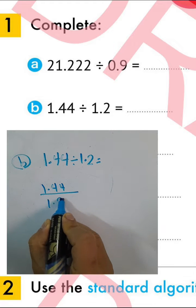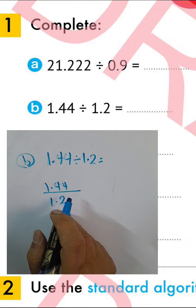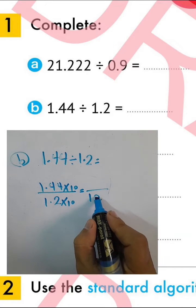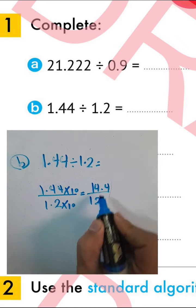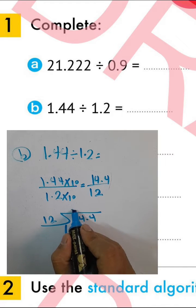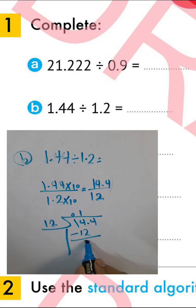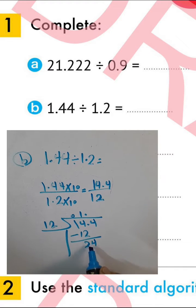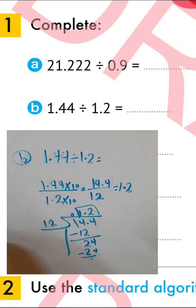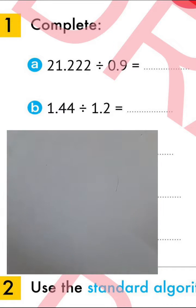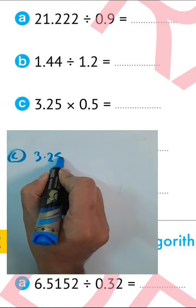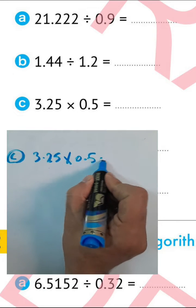Next: 1.44 divided by 1.2. We can cancel the point in the denominator by multiplication by 10. The result will be 12 in the denominator and 14.4 in the numerator. 14.4 divided by 12: 14 divided by 12 equals 1. One times 12 equals 12; the difference is 2. Drop 4. 24 divided by 12 equals 2. The result is 1.2.